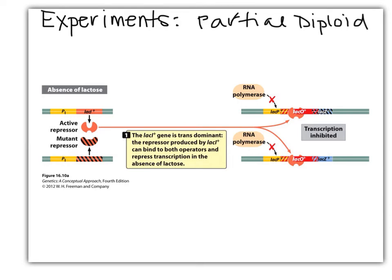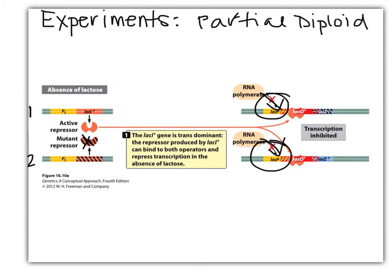These next slides cover experiments using partial diploid organisms — bacteria with two chromosomes — to examine the function of these genes. One chromosome has a normal repressor, and on the other, a mutation was created so the repressor doesn't work and can't bind the operator. The active repressor from the first chromosome still binds the lac operon, so RNA polymerase can bind the promoter but can't proceed because the repressor is in the way — no transcription.